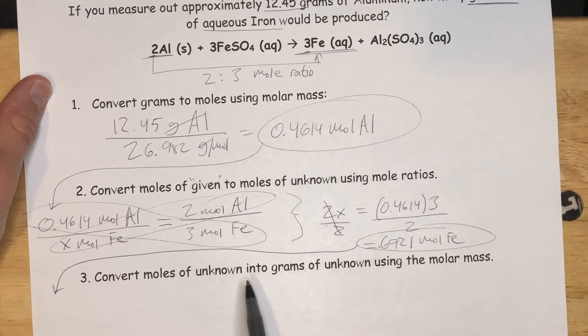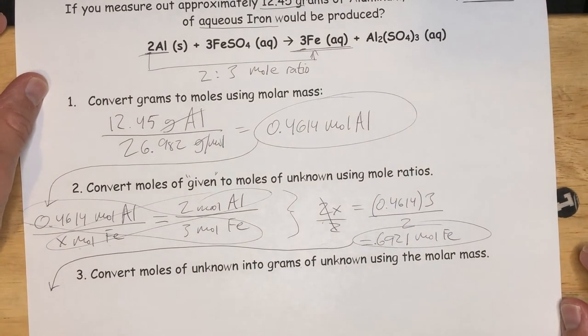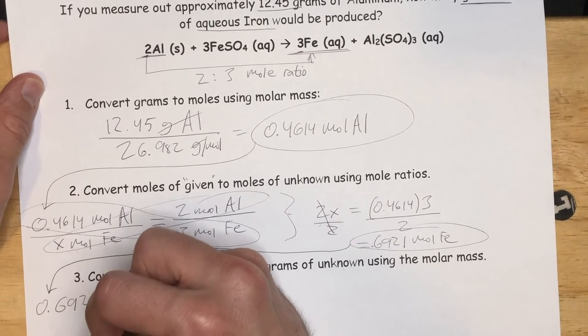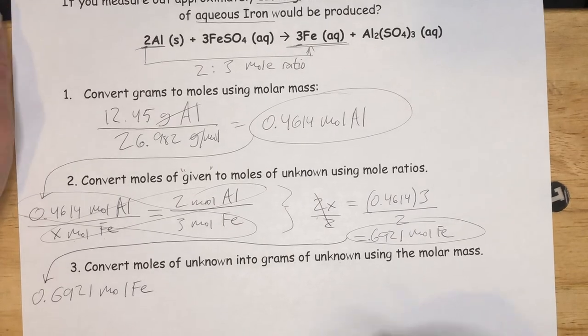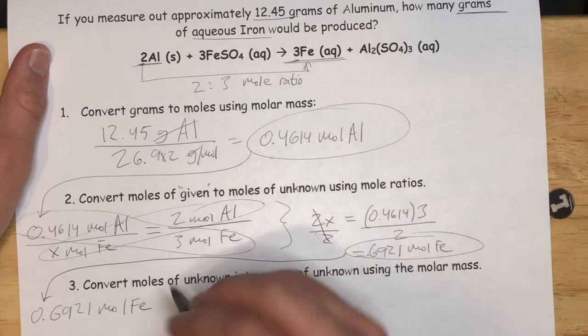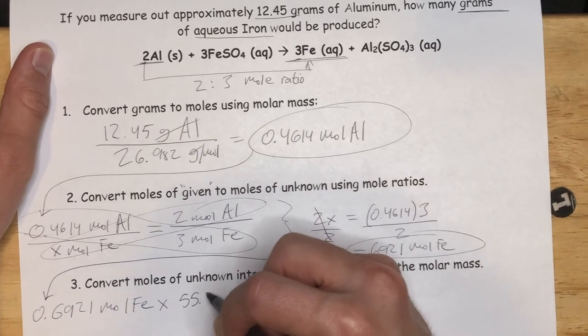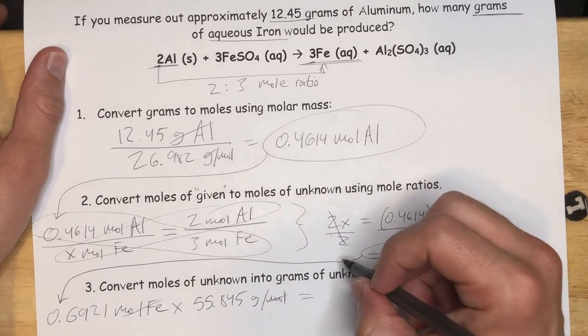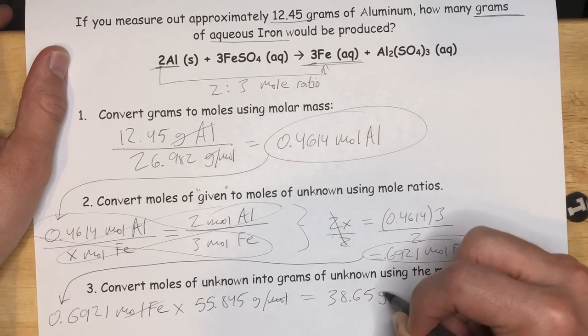So the way we do that is, well, looking at what we did originally, grams to moles is dividing. So moles to grams is multiplying. So we'll do that, 0.6921 moles of iron. We're multiplying, but what are we multiplying? Well, if going from grams to moles, we divide it by the molar mass. Well, we're going to multiply by the molar mass. We have to multiply by the molar mass of what we have, which is iron here. So we'll multiply this by iron's molar mass, which is 55.845. Moles will cancel out, leaving us with our final answer of grams. And the answer is 38.65 grams of iron.